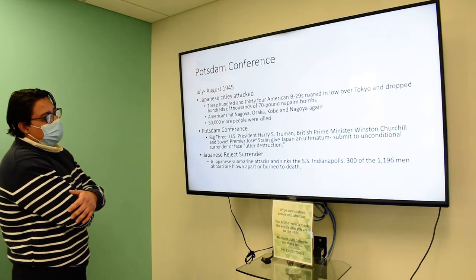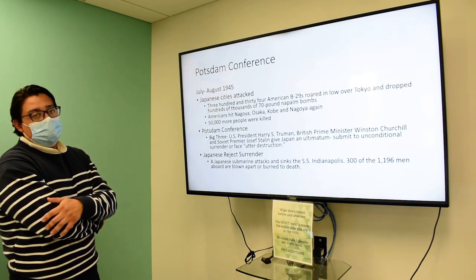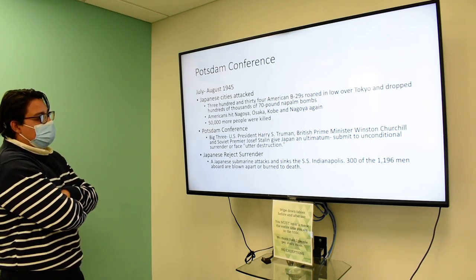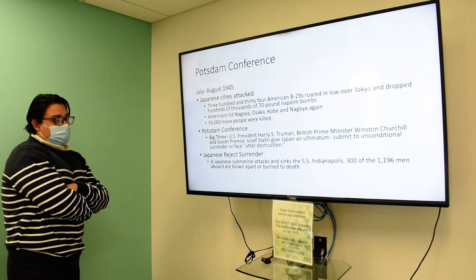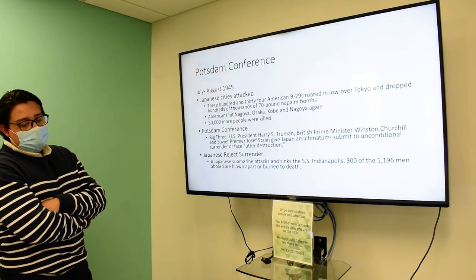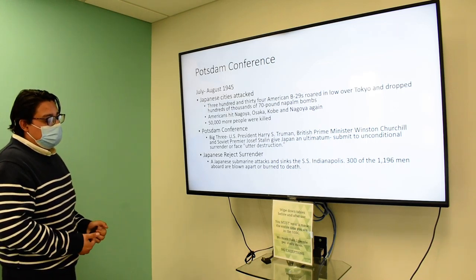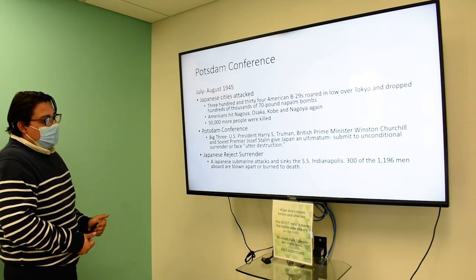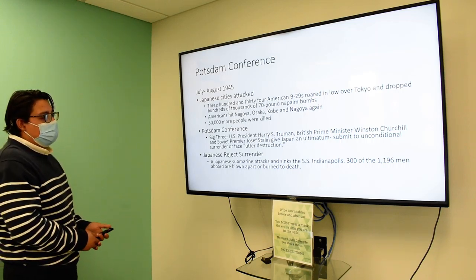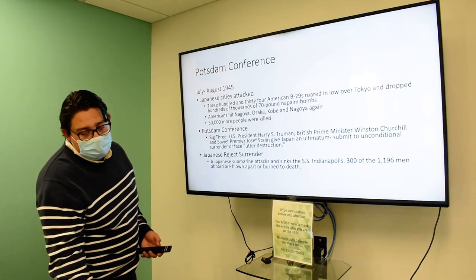The Big Three — Harry Truman, British Prime Minister Winston Churchill, and Soviet leader Joseph Stalin — met to discuss how the war would end and the fact that Japan still had not surrendered. They tried to get Japan to surrender; even the Soviet Union declared war on Japan. But the Japanese rejected surrender and attacked the USS Indianapolis.